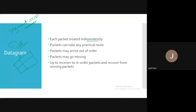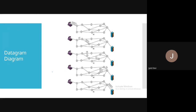Each packet is treated independently — packets can take any practical route. We will understand with the help of an example in the upcoming slide. Packets may arrive out of order, and we will see how they come out of order with the help of a diagram. Packets may go missing — there is a chance the packet may be lost. It is up to the receiver to reorder packets and recover from the missing packets.